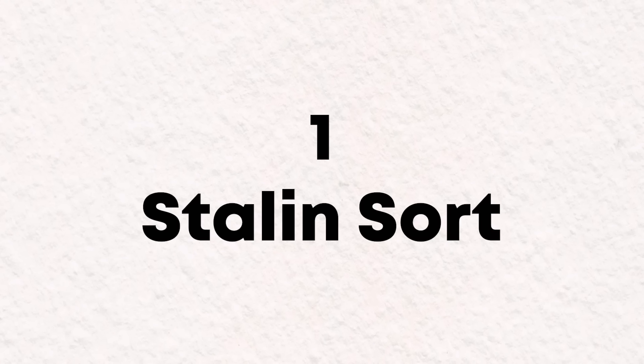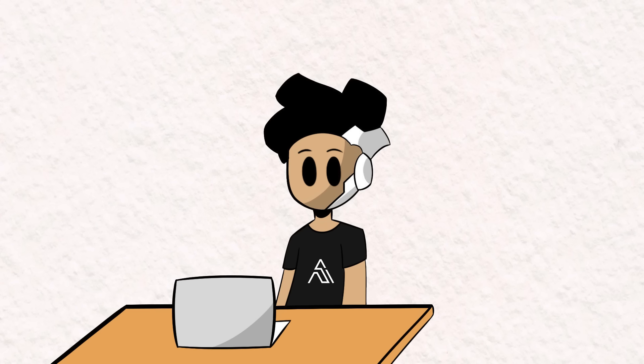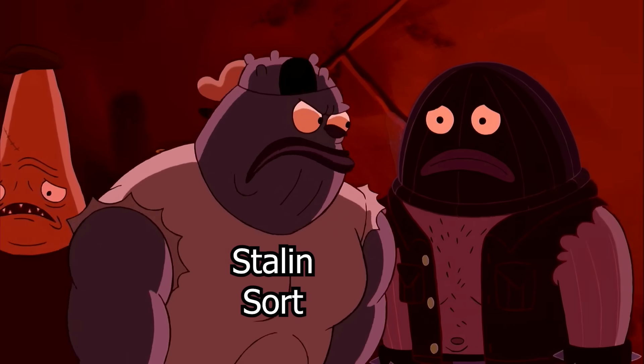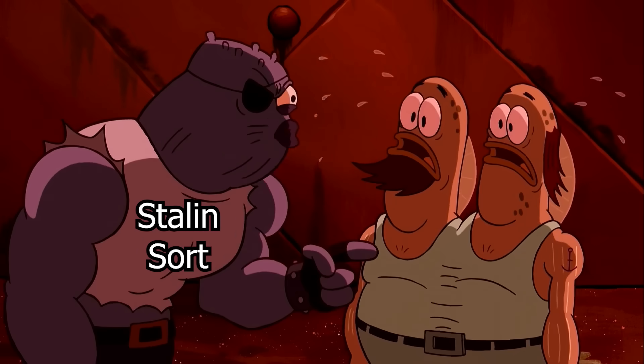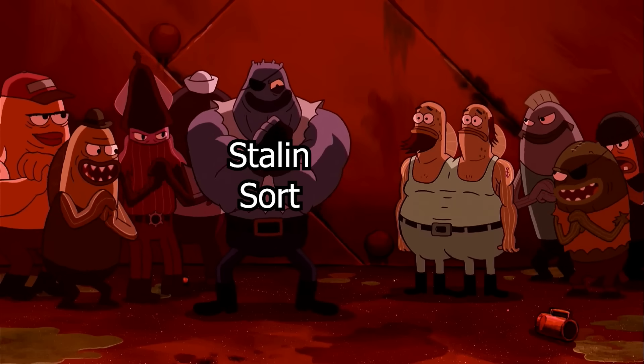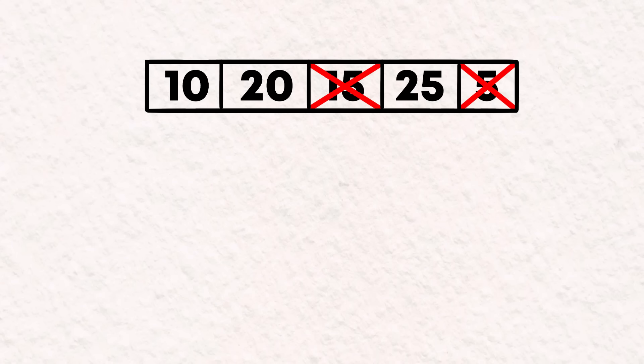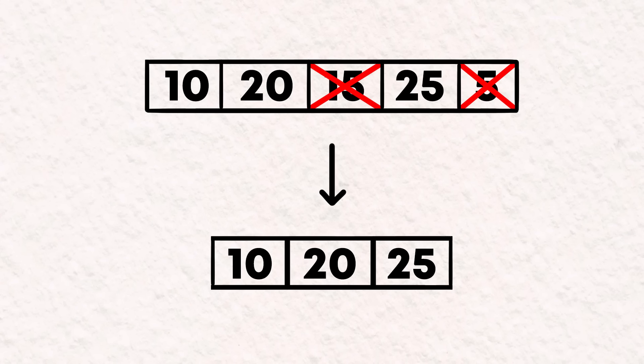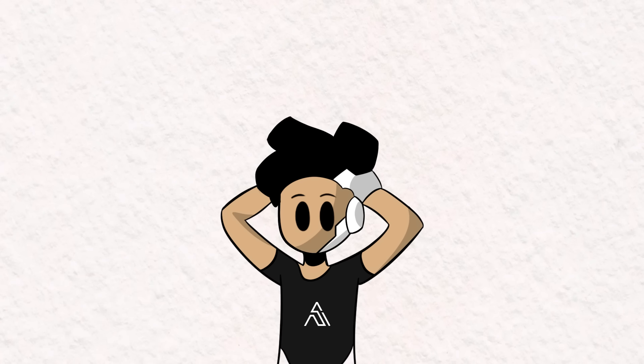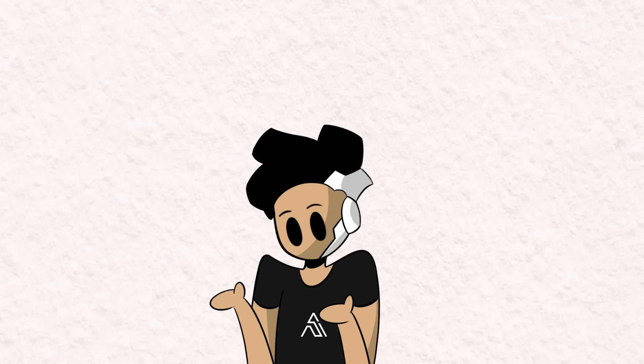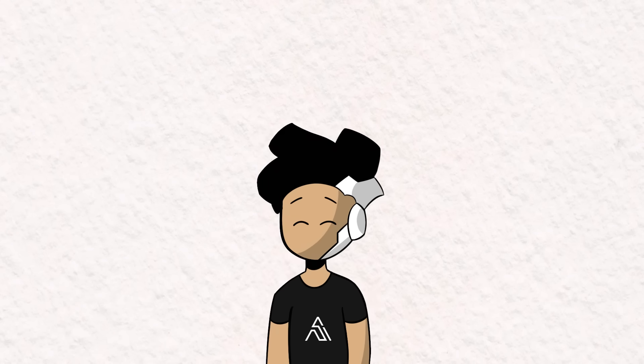Now back to the video. Starting at number 1, we have Stalinsort. Stalinsort is an algorithm that takes inspiration from the way Joseph Stalin ran things in the Soviet Union when people dared to act out of order. When you apply Stalinsort to a list, it goes through each element from left to right, and if it spots any element that's out of order, it gets deleted and sent to the gulag. It removes elements that are smaller than the previous element encountered, so the resulting list only contains elements that are in ascending order. What's funny about this algorithm is that it's guaranteed to work after only one iteration, but at the expense of losing some data.